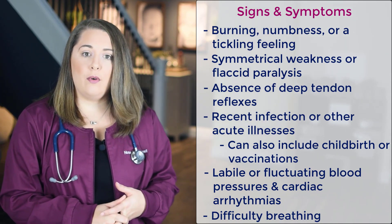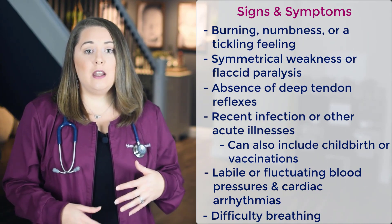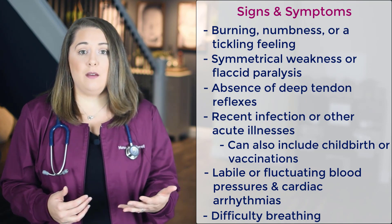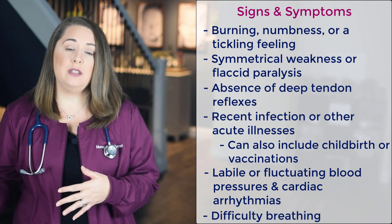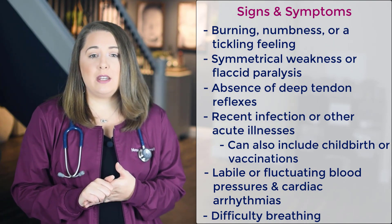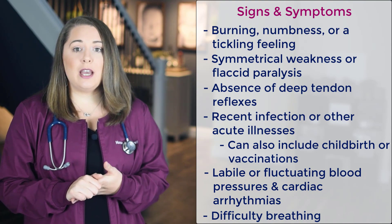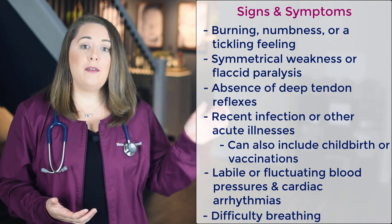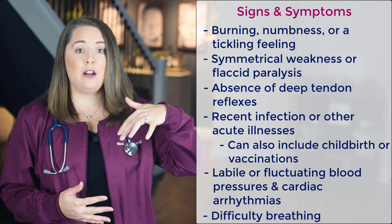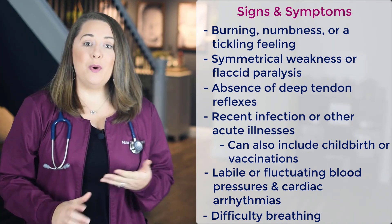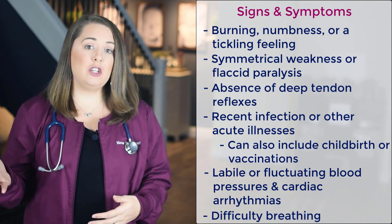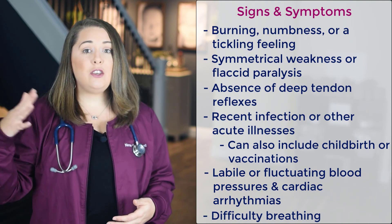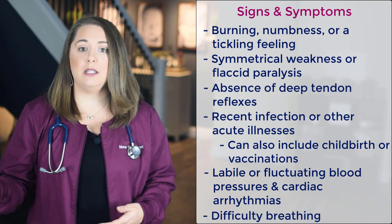The hallmark signs and symptoms to look out for include burning, numbness, or a tickling feeling, which happens as a result of destruction of the myelin sheaths around the axons. You're also going to look for symmetrical weakness or flaccid paralysis, seen in the ascending pattern from the feet up or descending from the face down. Remember the difference from stroke patients, who experience unilateral or asymmetrical weakness only on one side.